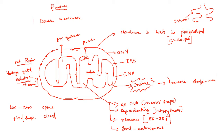Now discussing the structure of mitochondria: as you can see, mitochondria has a double membrane structure. The outer membrane is known as the outer mitochondrial membrane, the inner membrane as the inner mitochondrial membrane, and the space between them is known as the intermembrane space.